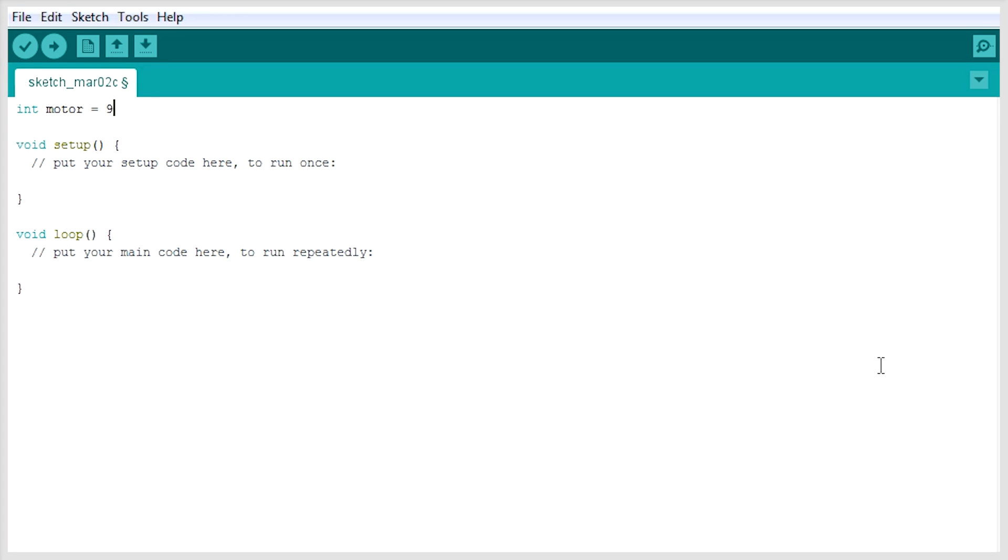We're going to want to add a couple integers here. So the first integer is going to be for the motor. And we're going to set that on PWM pin 9. Next, we're going to make an integer for X and just set it to 0 for now.